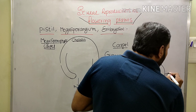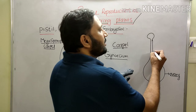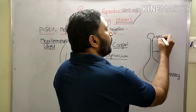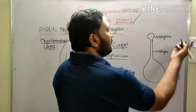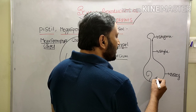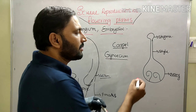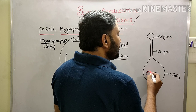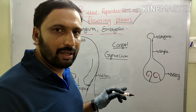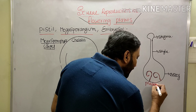The basal swollen part is called Ovary. The middle elongated part is called Style. The apical part, which receives the pollen grains, is called Stigma. Inside the ovary, ovules are present. The mode of arrangement of ovules in the ovary is called Placentation. The region where the ovules are attached to the ovary wall is called Placenta.